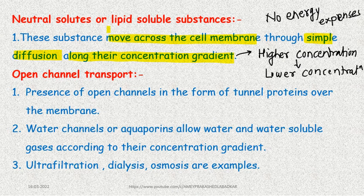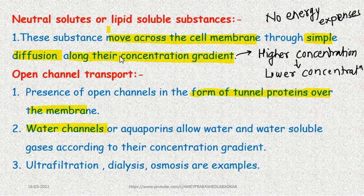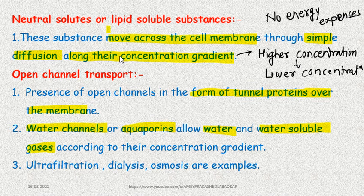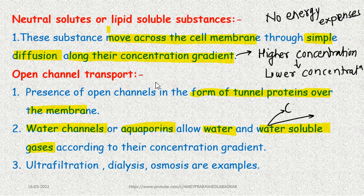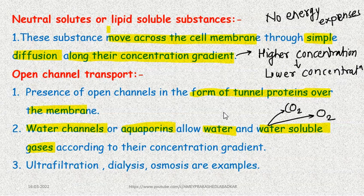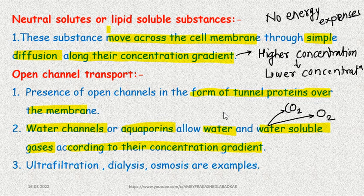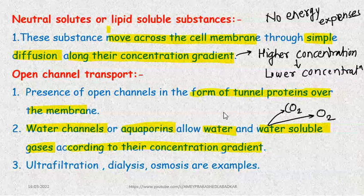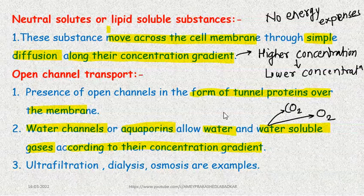In open channel transport, substances move through tunnel proteins over the membrane. Water channels called aquaporins are present, which transfer water and water-soluble gases. Two types of water-soluble gases are generally discussed: carbon dioxide and oxygen. Their transfer occurs along the concentration gradient, so passive processes never require energy.